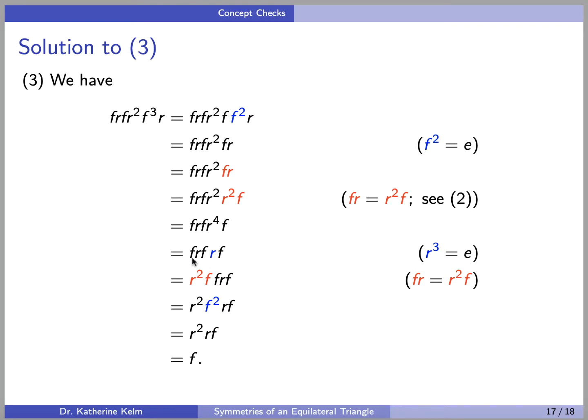Then we have FR here and that becomes R squared F. F composed with F is F squared and that's E. And finally, we have R cubed F and R cubed is the identity.